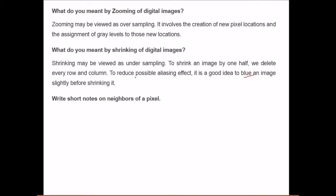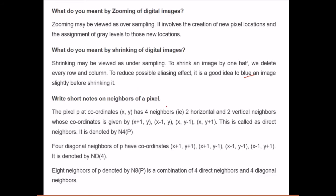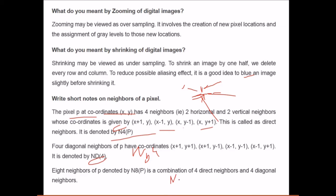For a pixel p at coordinates (x, y), it has four neighbors: two horizontal and two vertical, given by (x+1, y), (x−1, y), (x, y−1), and (x, y+1). These are called the direct neighbors, denoted N4(p). There are also four diagonal neighbors, denoted ND4(p). The eight neighbors of p, denoted N8(p), is the combination of the four direct neighbors and four diagonal neighbors.